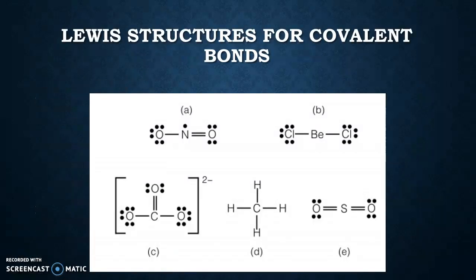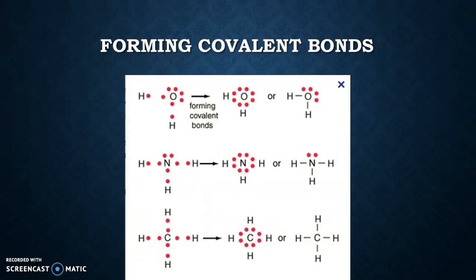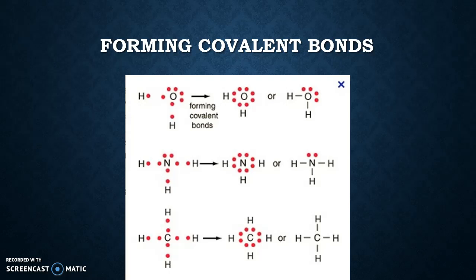These are your Lewis structures for covalent bonds. The dots on the outside represent the electrons, and the dashes represent that a covalent bond is in place — that the atoms are sharing those electrons. To correct an earlier statement, these are Lewis structures, not Bohr's model structures. When forming covalent bonds, the easiest approach is to draw your dots around each element, see which one only has one, put the dots together, and substitute a dash for two dots between two different elements. The first example shown is actually the Lewis structure for water.